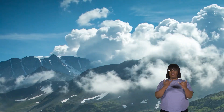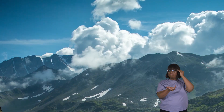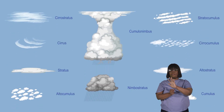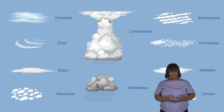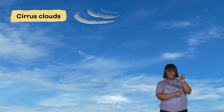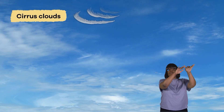Now that we know what a cloud is, let's talk about the different types of clouds. Cirrus are high, thin, wispy clouds that appear during good weather.